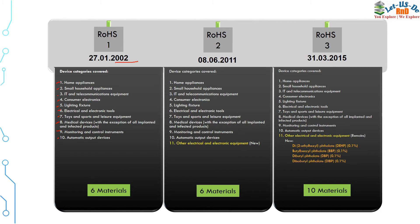The second version, RoHS 2, was introduced in 2011. It was the same as RoHS 1 but added the category of 'other electrical and electronic equipment' — covering whatever was not included under the previous definitions. The European Union came up with this modification in RoHS 2, making it applicable to all electrical and electronic equipment from 2011. RoHS 2 had six restricted materials.